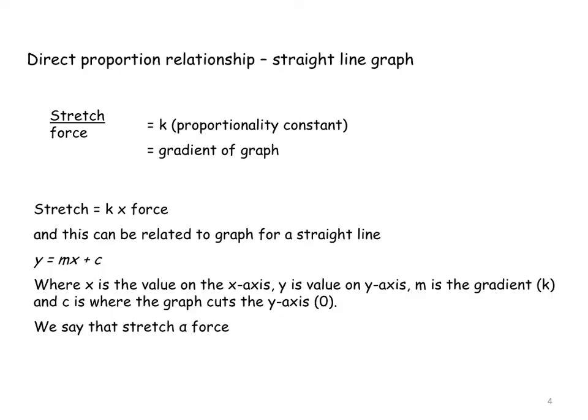A direct proportional relationship means that you've got a straight line graph. And if you divide the y divided by the x, you end up with the same value and that is the gradient of the graph.